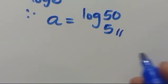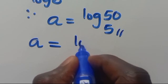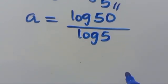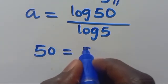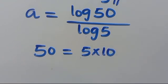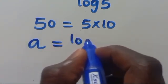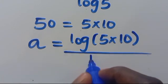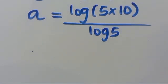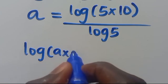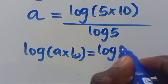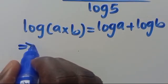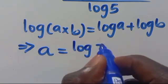So we have a equals log 50 over log 5. We can express 50 as a product of 5 times 10, so we have log(5 times 10) over log 5. Using the rule log(a times b) equals log a plus log b, this gives us log 5 plus log 10 over log 5.